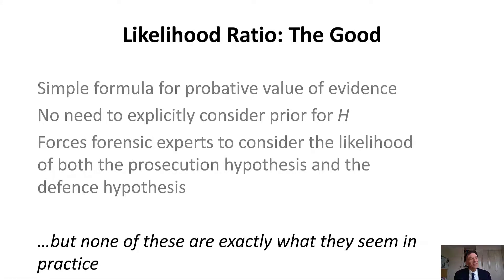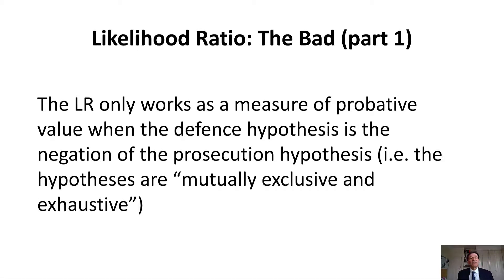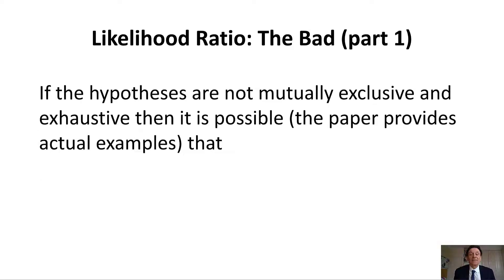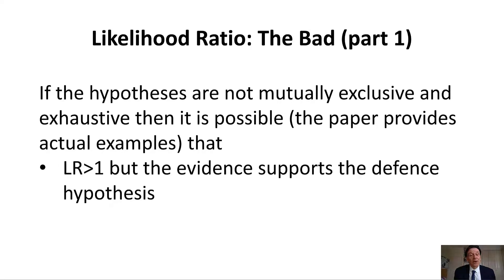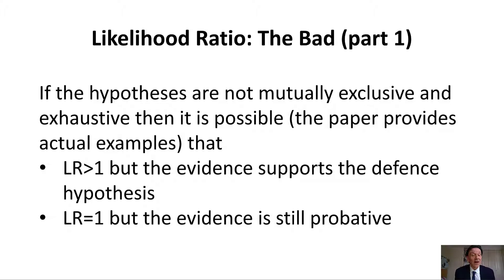But the problem is none of these are exactly what they seem in practice. The likelihood ratio only works as a measure of probative value when the defense is the negation of the prosecution hypothesis — i.e., the hypotheses are mutually exclusive and exhaustive. That's because Bayes' theorem relies on the assumption that we're comparing H against not H. As the accompanying paper shows, if the hypotheses are not mutually exclusive and exhaustive, it's actually possible for the likelihood ratio to be greater than one but the evidence actually supports the defense hypothesis — and similarly, the likelihood ratio can be less than one but support the prosecution hypothesis, or equal to one but still be probative.